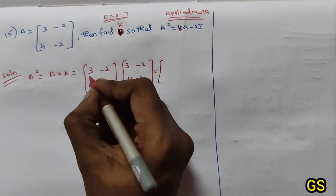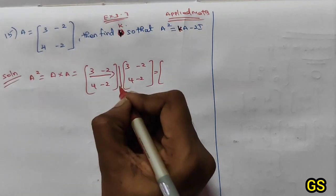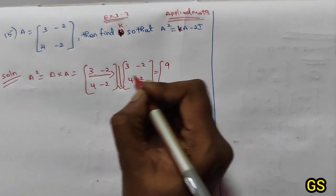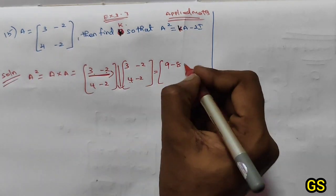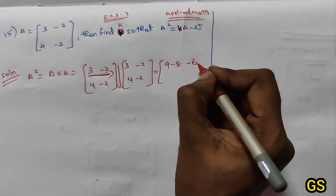First row, first column: 3 times 3 is 9, 2 times 4 is minus 8. First row, second column: 3 times -2 is -6, 2 times -2 is 4.